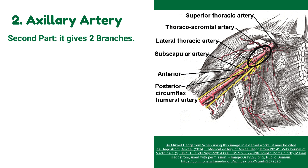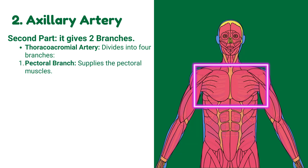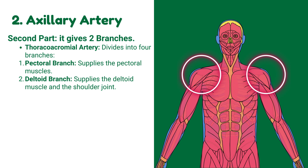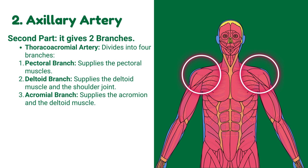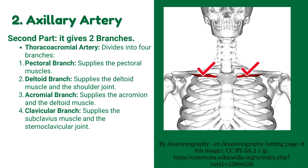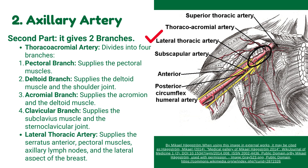The second part gives two branches. First, the thoracoacromial artery, which divides into four branches: the pectoral branch, supplying the pectoral muscles; the deltoid branch, supplying the deltoid muscle and the shoulder joint; the acromial branch, supplying the acromion and the deltoid muscle; and the clavicular branch, supplying the subclavius muscle and the sternoclavicular joint. Second, the lateral thoracic artery, which supplies the serratus anterior, pectoral muscles, axillary lymph nodes, and the lateral aspect of the breast.